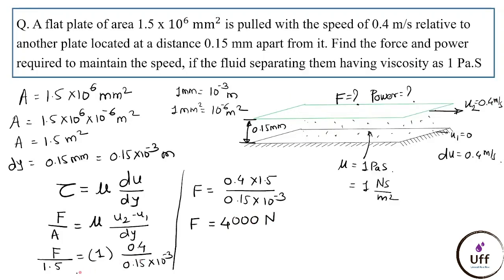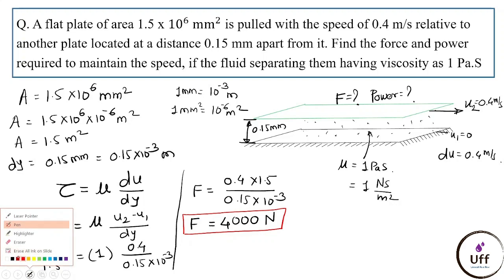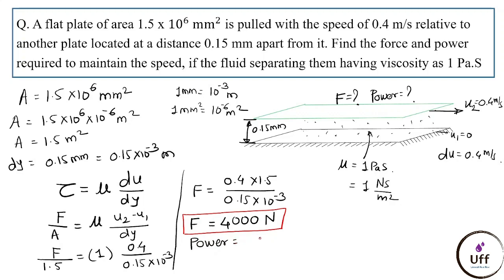The force required to move the plate at 0.4 m/s is 4000 N. Now for power: P = F × v = 4000 × 0.4 = 1600 W. So the power required is 1600 watts.